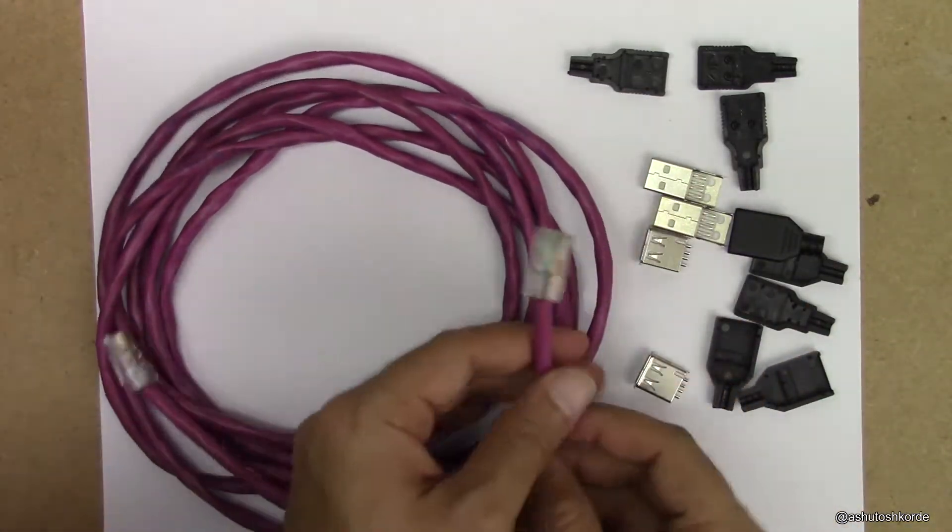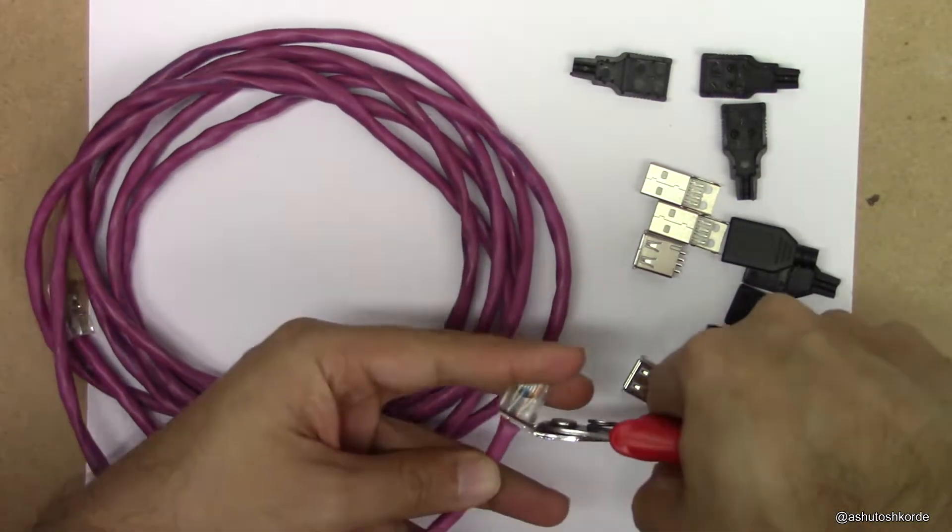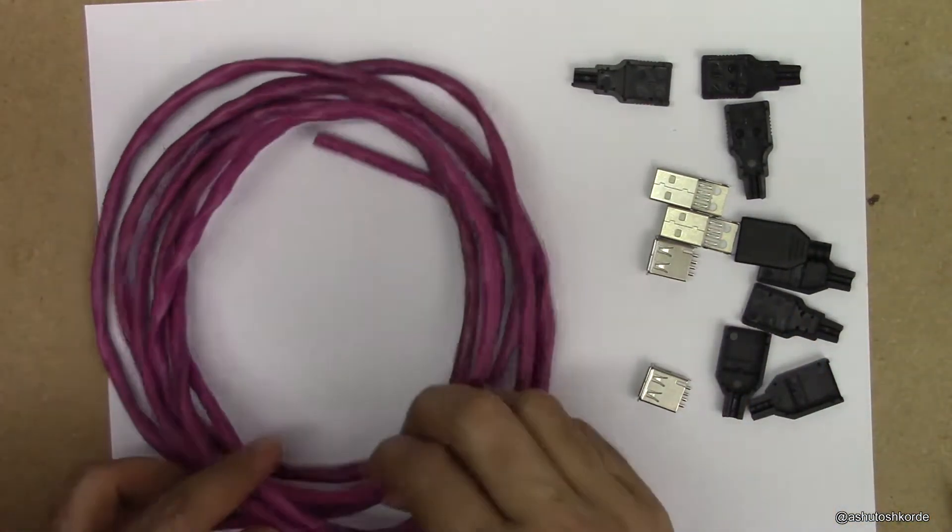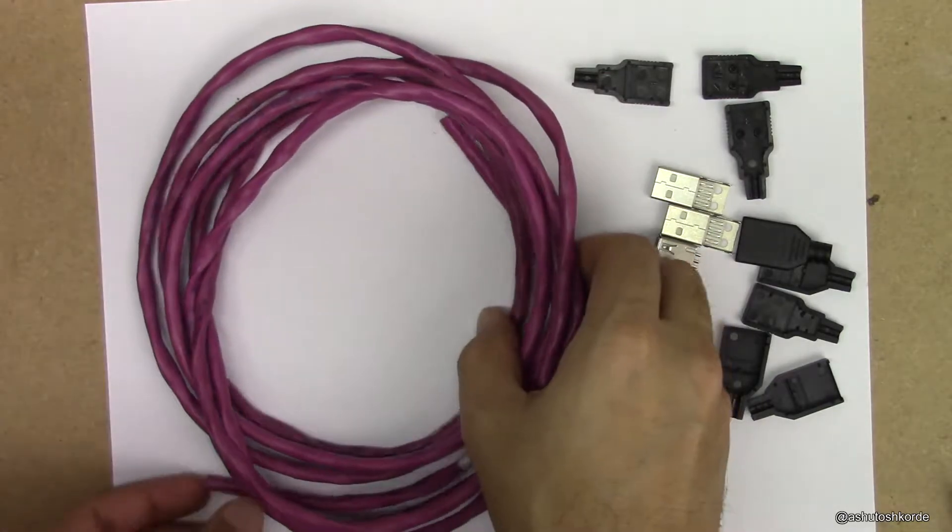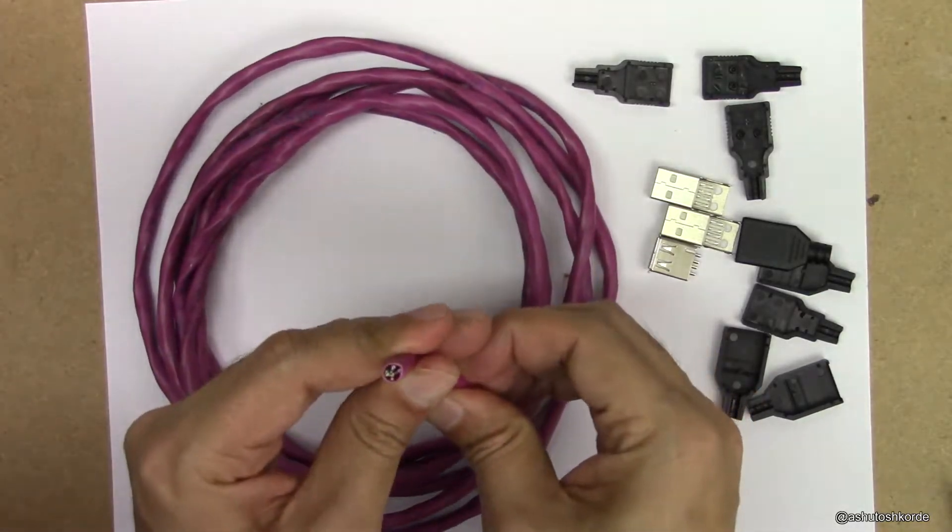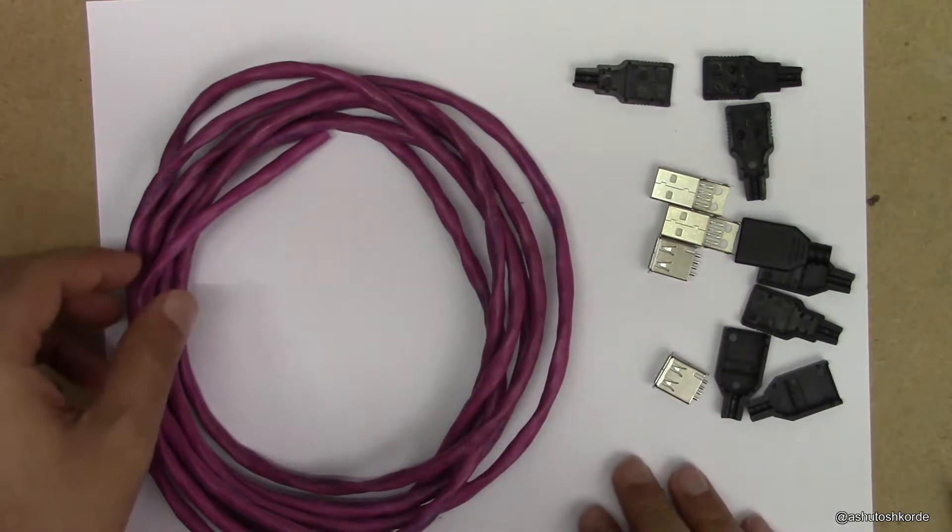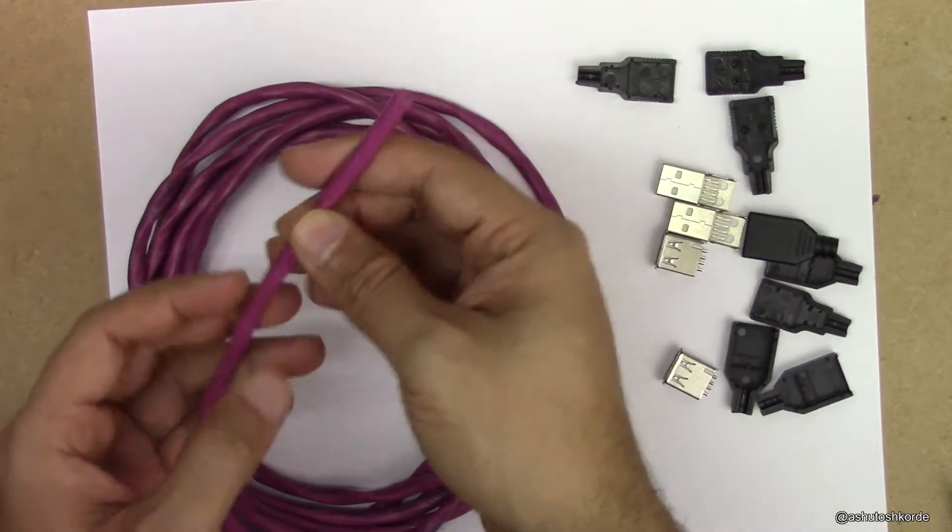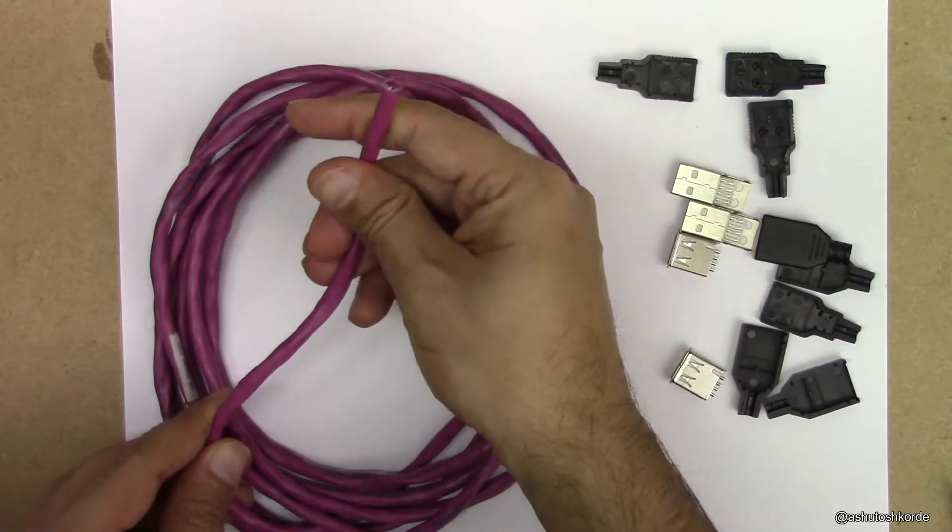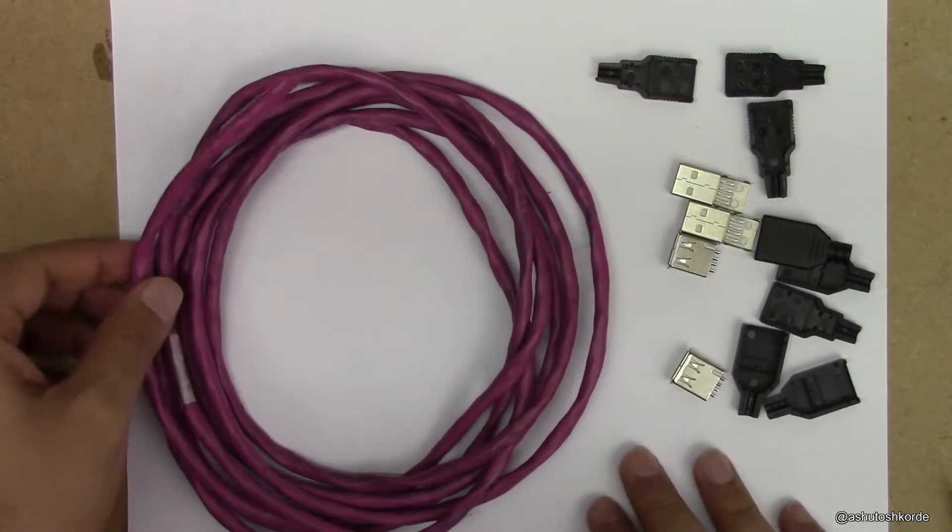Once we have all the things that we need, the actual process is pretty simple. All I'm going to do is snip off these ends. Now one thing to remember about this is all the CAT5 cables come in two varieties: one is the solid variety and one is the stranded variety. For a USB extension cable it would be much better to use a stranded cable because a stranded cable is much more flexible than a solid CAT5 cable, and most of the patch cords that you would find are the stranded variety.